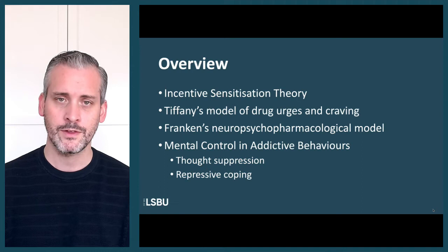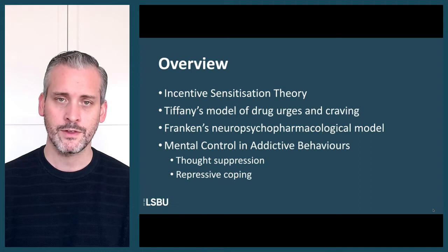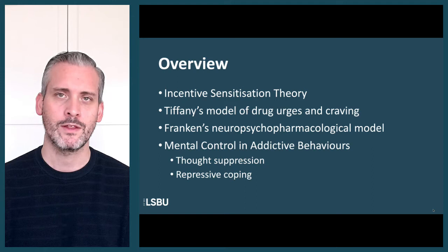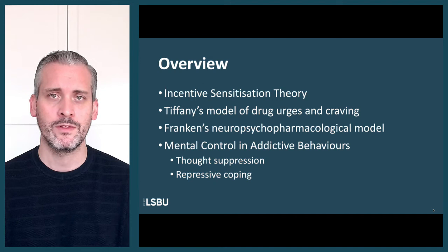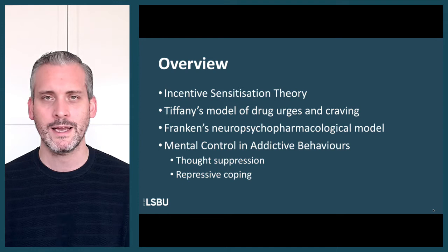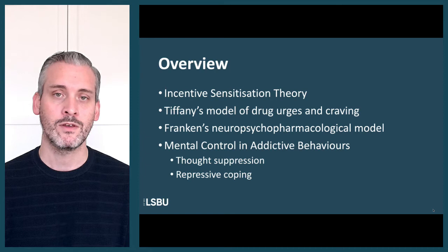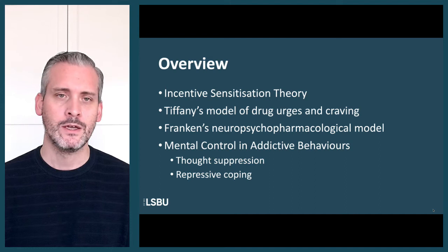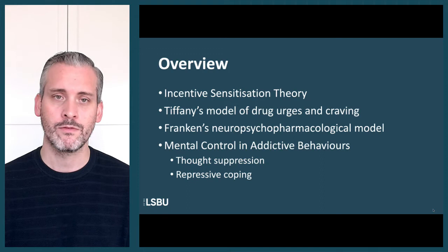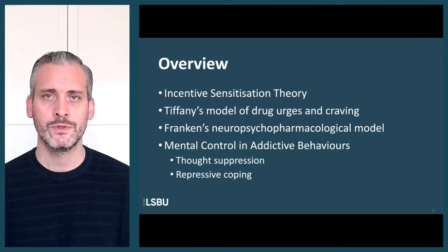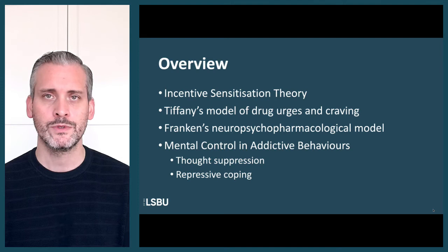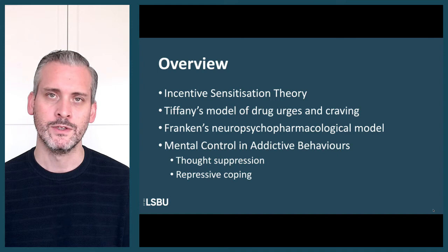We'll then move on to look at some of the cognitive models of drug craving and urges, because craving itself is something that is very well understood in a general sense — most people can explain it — but at a technical level, some of the explanations for what craving is are not necessarily that clear. The role that craving plays in the development, maintenance, and things like relapses in addiction isn't always clear. We'll look at two particular theorists — Tiffany and Franken — and then move on in the third part to look at mental control in addictive behaviours.